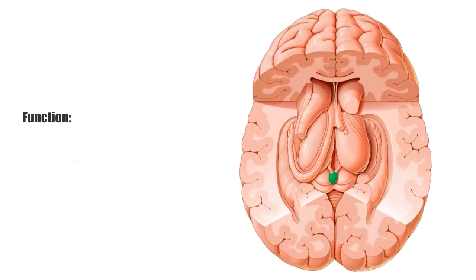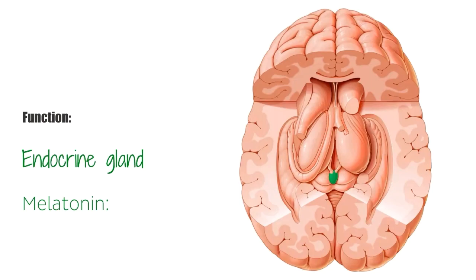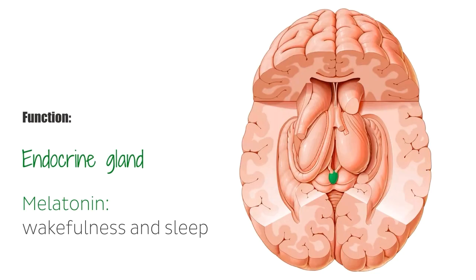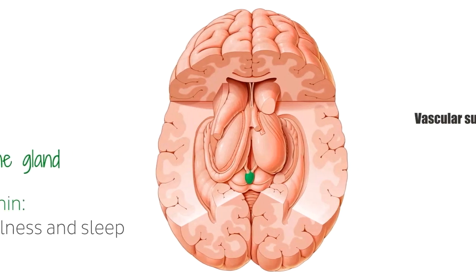The pineal gland is an endocrine gland that functions to produce the hormone melatonin, a hormone that affects the state of wakefulness and sleep, as well as photoperiodic or seasonal functions. It is also believed to have a reproductive function associated with the onset of puberty, inhibiting the maturation of genitals until puberty. It's worth noting that, unlike the rest of the brain, the pineal gland is not isolated from the body by the blood-brain barrier.